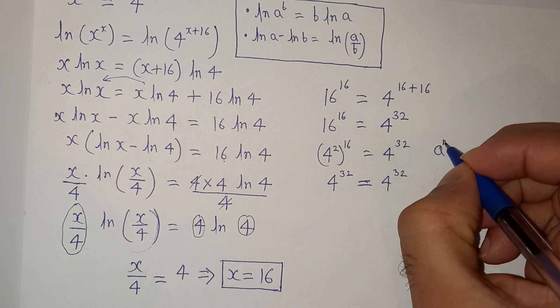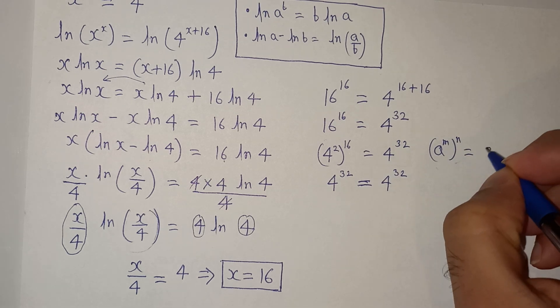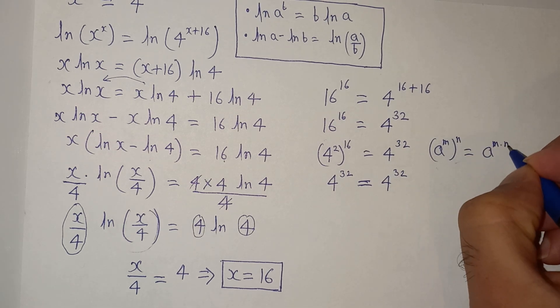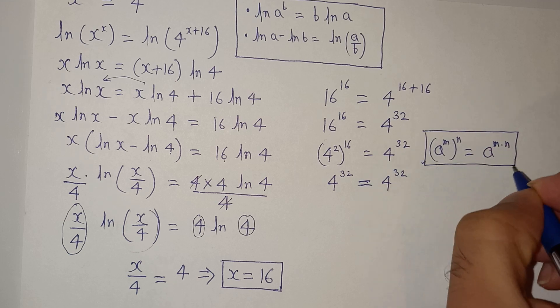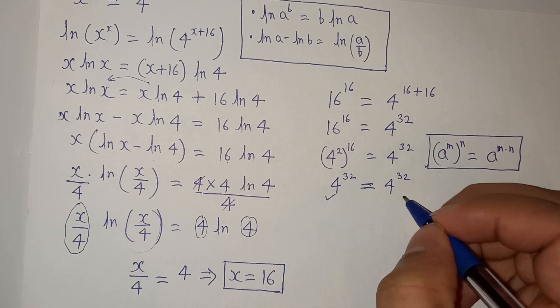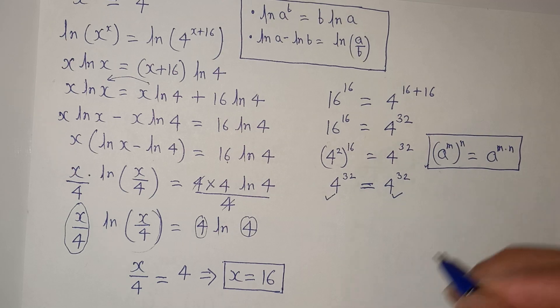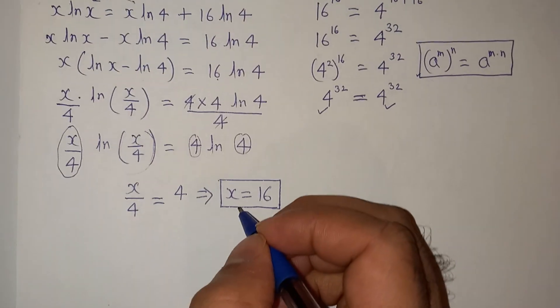which is a power m power n equals to a power m multiplied n. So we can see that left hand side is equals to right hand side, so our answer was correct.